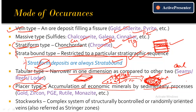Placer deposits form through erosion, transportation, and deposition. Examples of placer deposits include gold, zircon, rutile, monazite, sillimanite, and platinum group elements (PGE). Gold can occur as both vein type and placer deposits, illustrating that one ore type can occur in multiple modes.